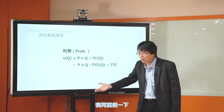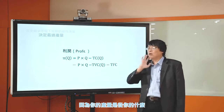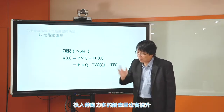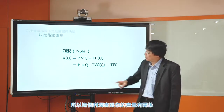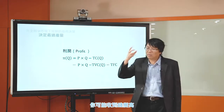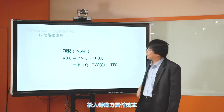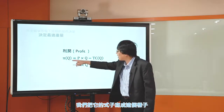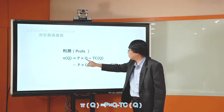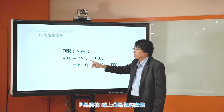所以要從利潤來算出最適產量。利潤（Profit）函數長什麼樣子呢？非常簡單，π(Q) = P × Q - TC(Q)。P是價格，Q是產量。當產量在變動的時候，你的利潤的數字會變動，因為產量來自投入勞動力，投入勞動力有成本，產量變高收到錢也變高，但成本也跟著變。